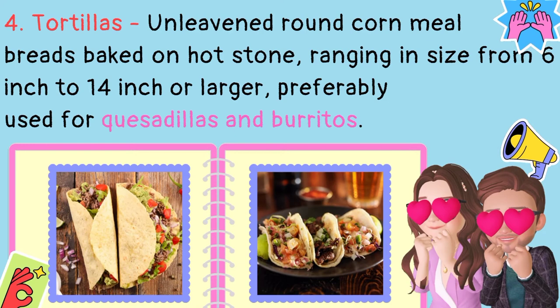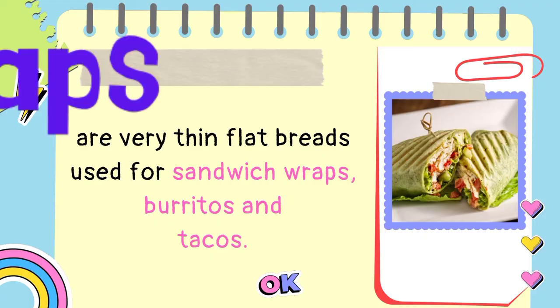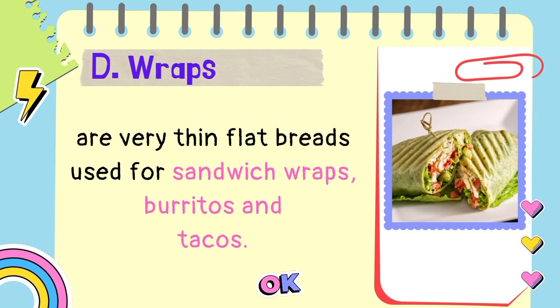4. Tortillas — unleavened round cornmeal breads baked on hot stone, ranging in size from 6 inch to 14 inch or larger, preferably used for quesadillas and burritos. D. Wraps are very thin flat breads used for sandwich wraps, burritos, and tacos.